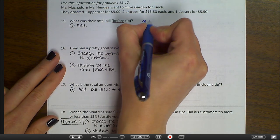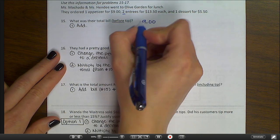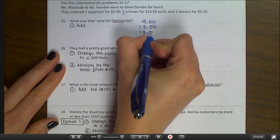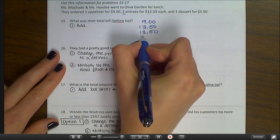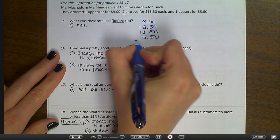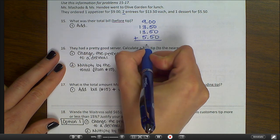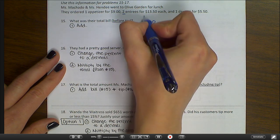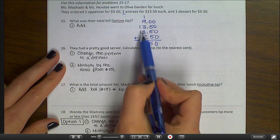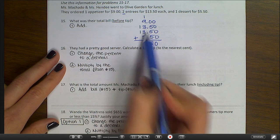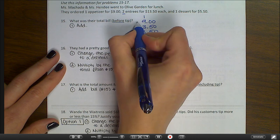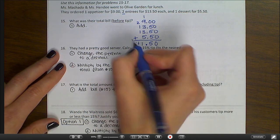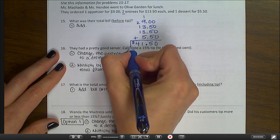I'm going to add up the numbers. So I have $9, I have two entrees for $13.50 each, and I have a dessert for $5.50. So we're just going to add, make sure that those decimal points are lined up. 1 plus 9 is 10, 13, 16, plus 5 is 21. So $41.50 is the amount before the tip.